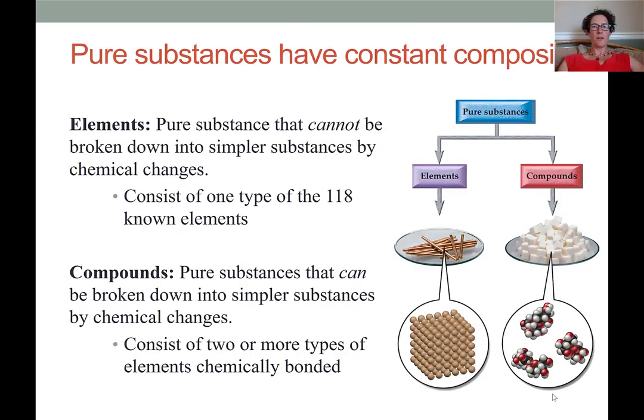Pure substances are much easier to study chemically because they have a constant composition. For example, any pure substance that is an element is completely uniform being composed of just one of the possible 118 known elements. Elements cannot be broken down into simpler substances through any sort of chemical change. This is a useful distinction from compounds because compounds can be broken down into their respective elemental parts through chemical change.